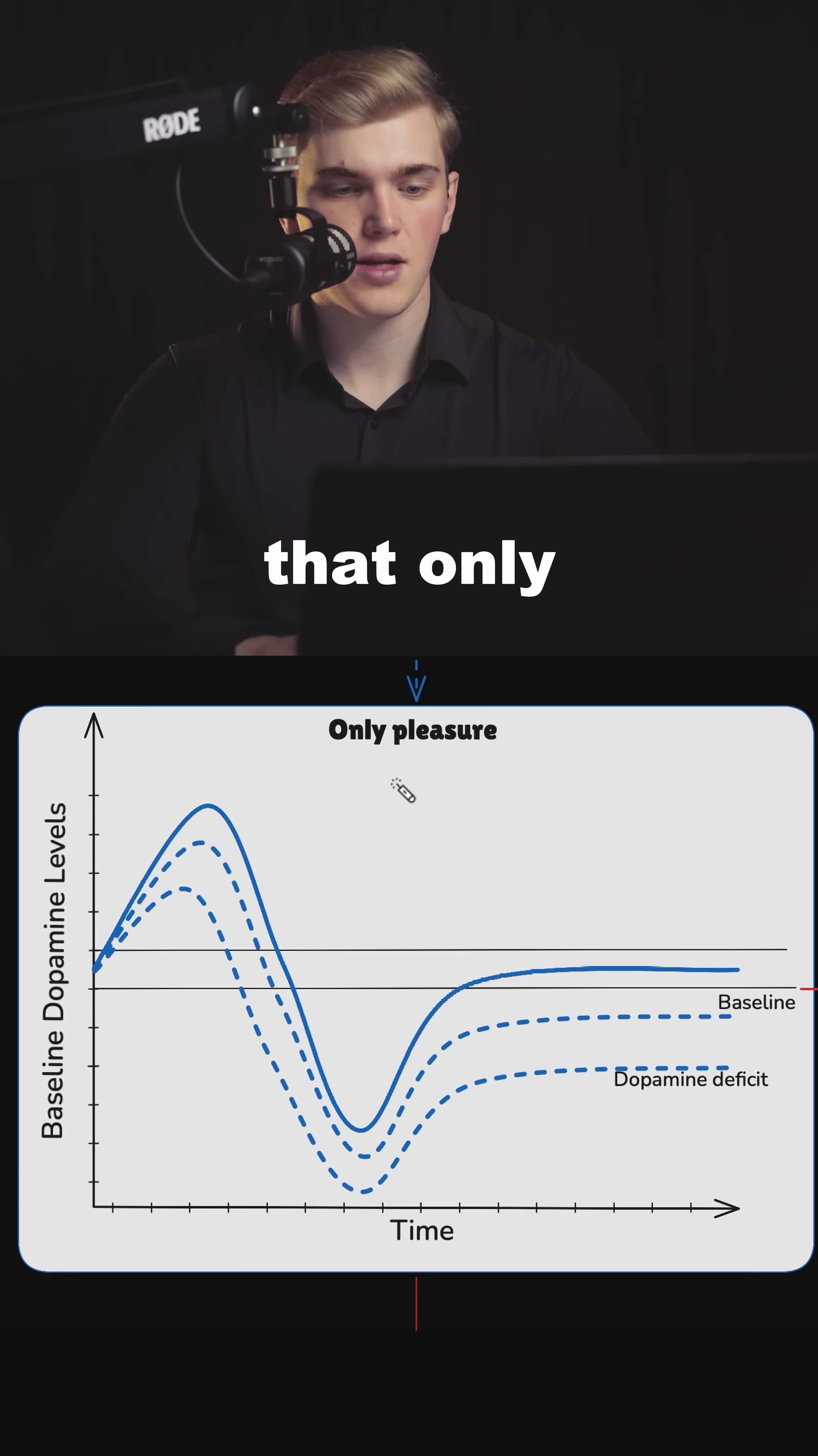However, if you engage in activities that only induce pleasure and there is no amount of effort involved, what will happen is that with repeated use—for example, let's take smoking—with repeated use of cigarettes, not only will your dopamine peaks get smaller and smaller so you will not experience that much pleasure, but the dip in dopamine will increase and you will not be able to return to baseline values. So your baseline values of dopamine will drop, and this is where we develop a dopamine deficit.